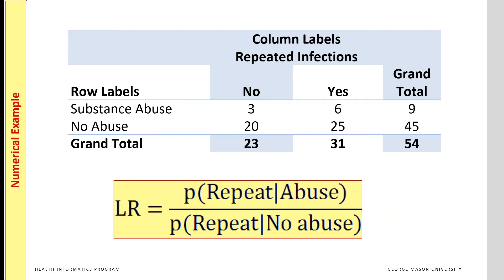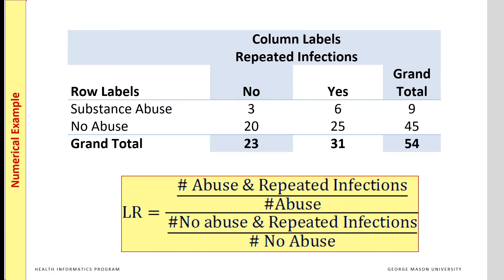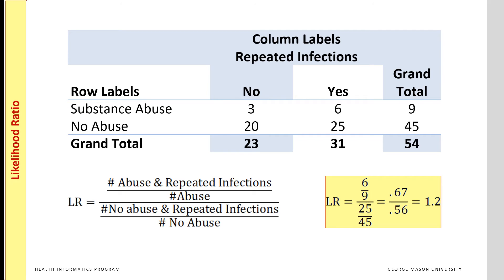The frequency of repeated infections is calculated in two different subsets of data. The likelihood ratio is calculated as the number of times abuse and repeated infections occurred among patients with abuse, divided by the number of times no abuse and repeated infections occurred among patients with no abuse. We note that 67% of the time repeated infections occurred among patients with substance abuse, and 56% of the time among patients with no substance abuse. Therefore, our likelihood ratio is calculated to be 1.2. A likelihood ratio of 1.2 is higher than 1, so repeated infections increase the odds of current or future substance abuse by 1.2 times.